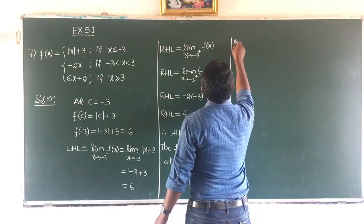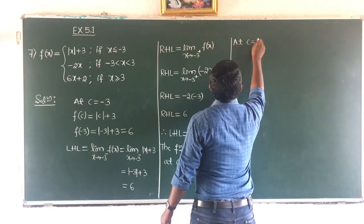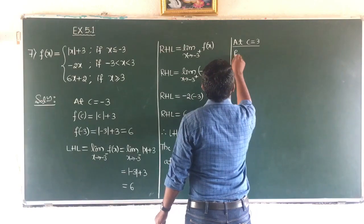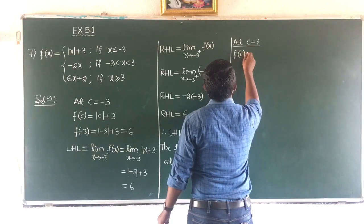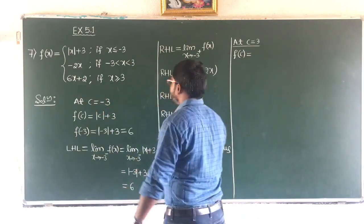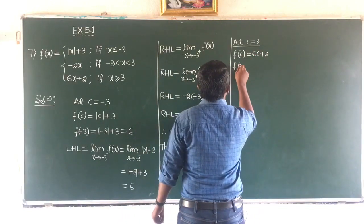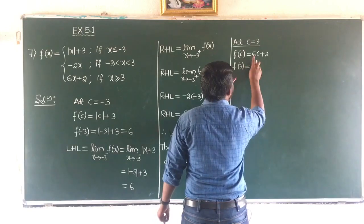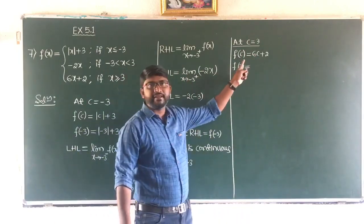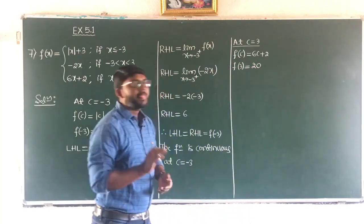At c equal to plus 3, the function is 6x plus 2, so f(c) equals 6c plus 2. Therefore f(3) equals 6 into 3 which is 18, plus 2 which is 20. The value of the function is 20.